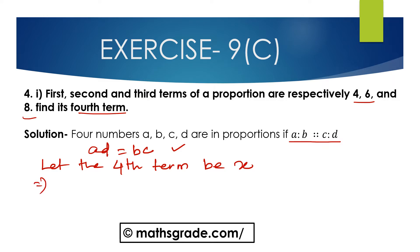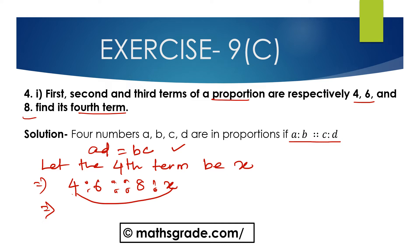So 4 is to 6 is proportional to 8 is to x, since 4, 6, 8 and x are in proportion. The product of the extremes is 4 multiplied with x, that is 4x. This is equal to the product of the means, which is 6 multiplied with 8.